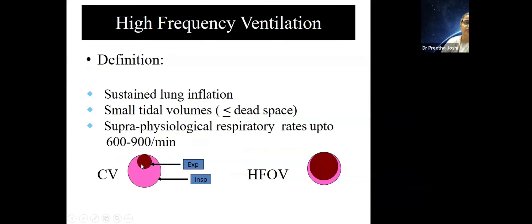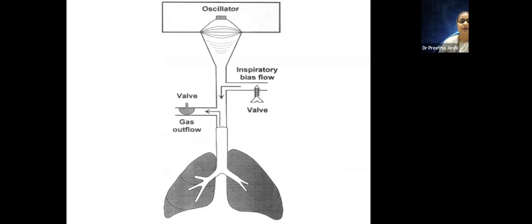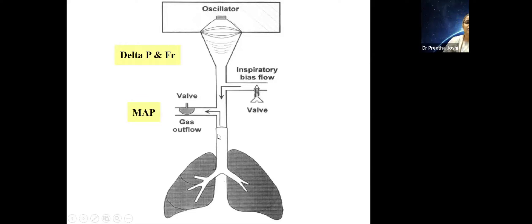During conventional ventilation there is inspiration followed by a big change in lung volume during expiration due to pressure. In high-frequency ventilation, pressure is sustained, so there is much less shear stress and strain injury. In the graphical model, a diaphragm oscillates with an inspiratory bias flow coming in, and a gas outflow valve regulates how much pressure is maintained inside the lung. The MAP is maintained by this mechanism, and the oscillator delta P and frequency come from the piston.